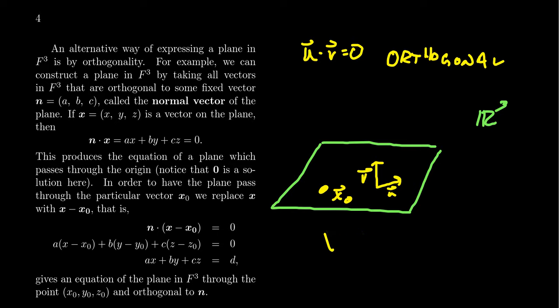It turns out we can describe it, instead of using two spanners, we can actually describe it using a so-called normal vector, a vector which is orthogonal to every point in the plane. Geometrically speaking, our normal vector is going to look something like this, call it n right here.